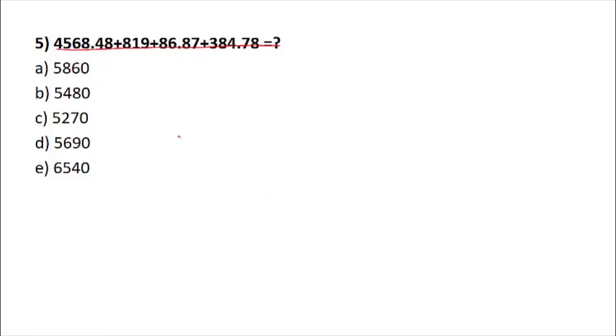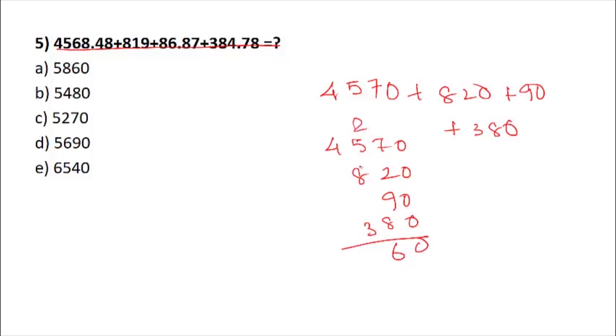Question number 5. This could be written as 4570, this 819 could be written as 820, this 86 could be written as 90, and 384 could be written as 380. If you add all these numbers, 4570, 820, 90, and 380, this will give you 5860. Your correct option would be D.